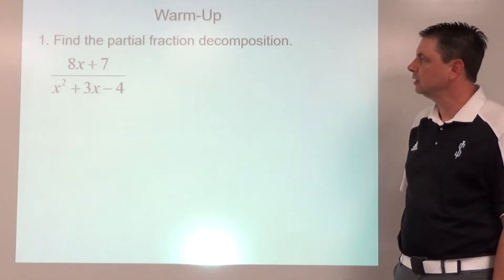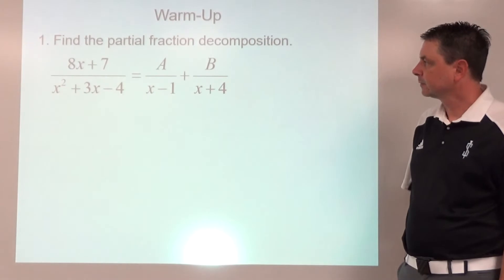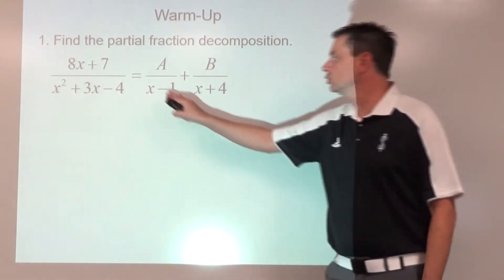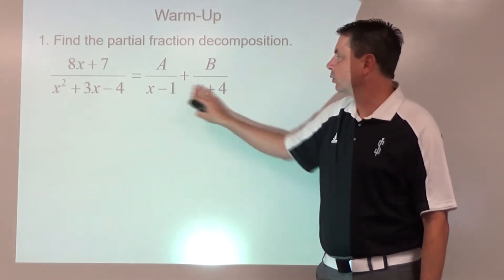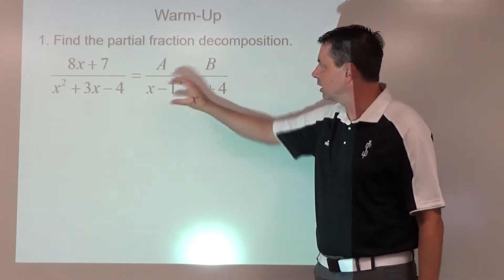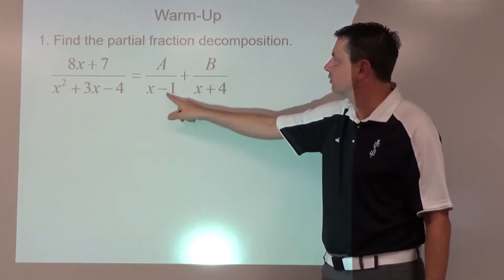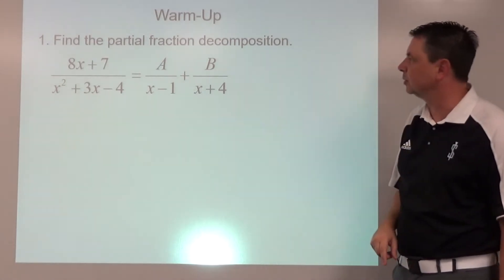All right, number one. Factor the denominator and then split it up into a fraction with one of the factors here and one of the factors there. Then if we add these together and create a common denominator, this one's missing an x plus 4 top and bottom, this one's missing x minus 1, multiply that top and bottom.